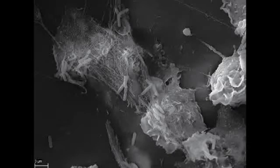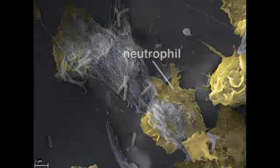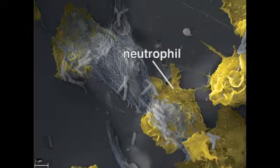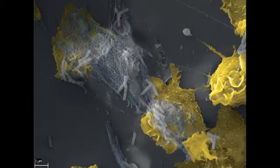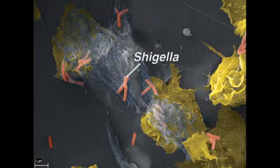In this scanning electron micrograph, neutrophils are attached to a flat surface, and we can see the abundant folds of their cell membranes. We can also see that the neutrophils are infected with the gram-negative bacteria Shigella, which appear as rod-shaped objects and are colored red.